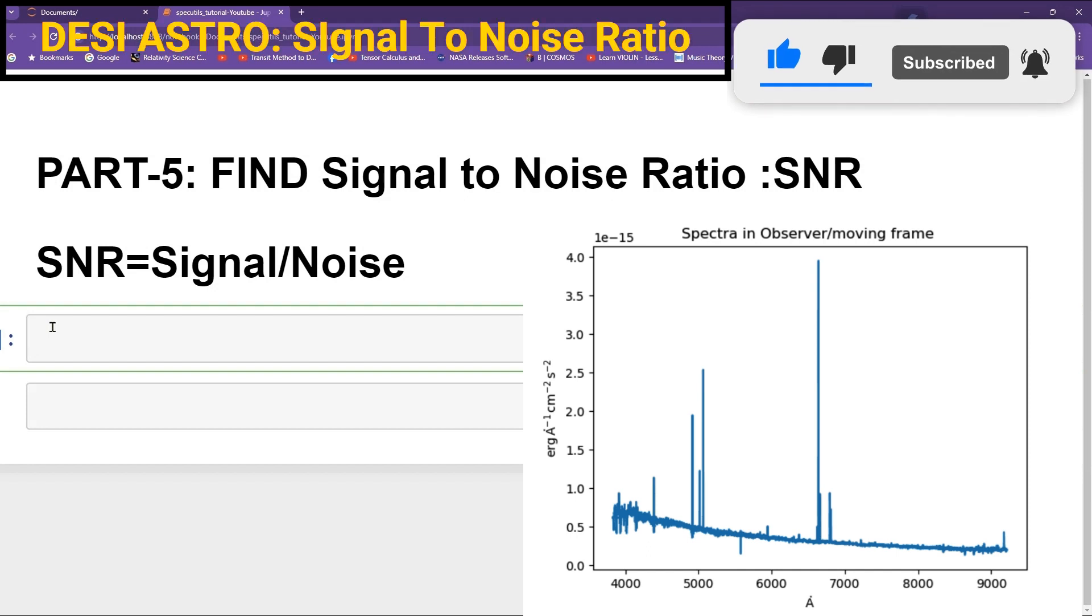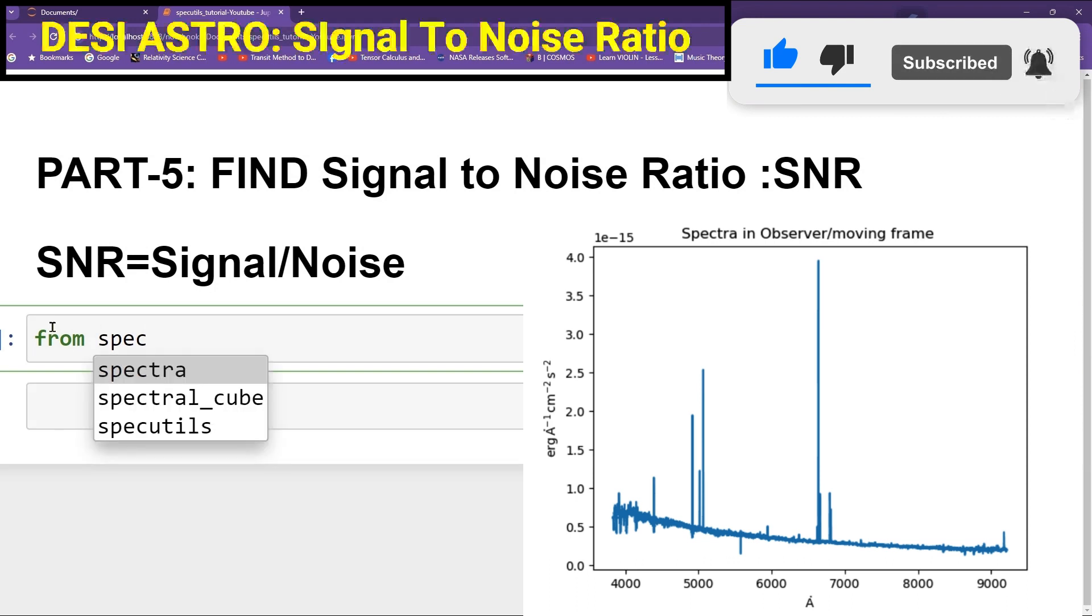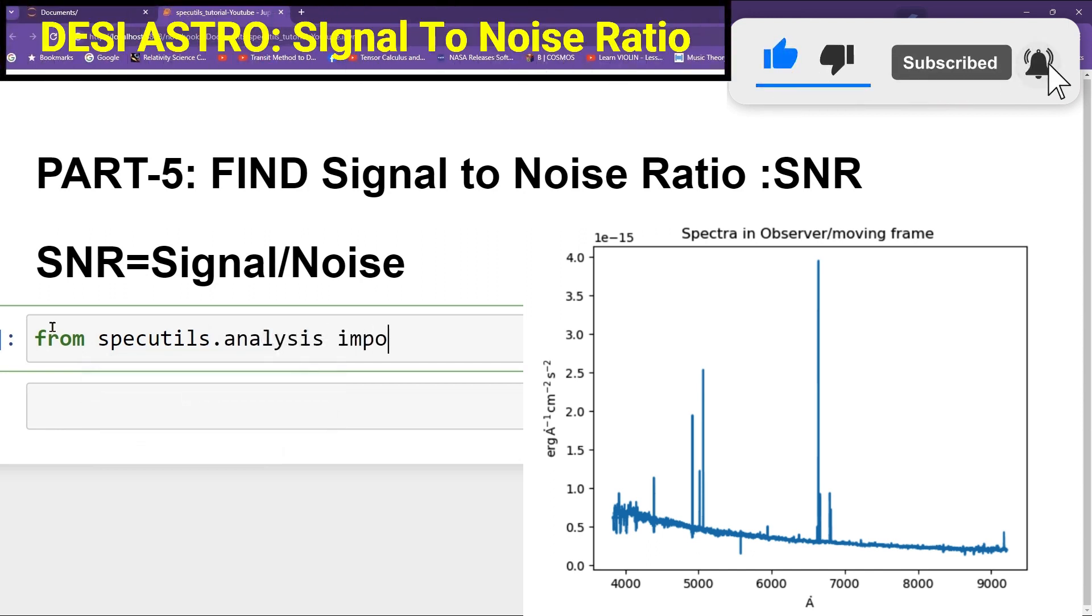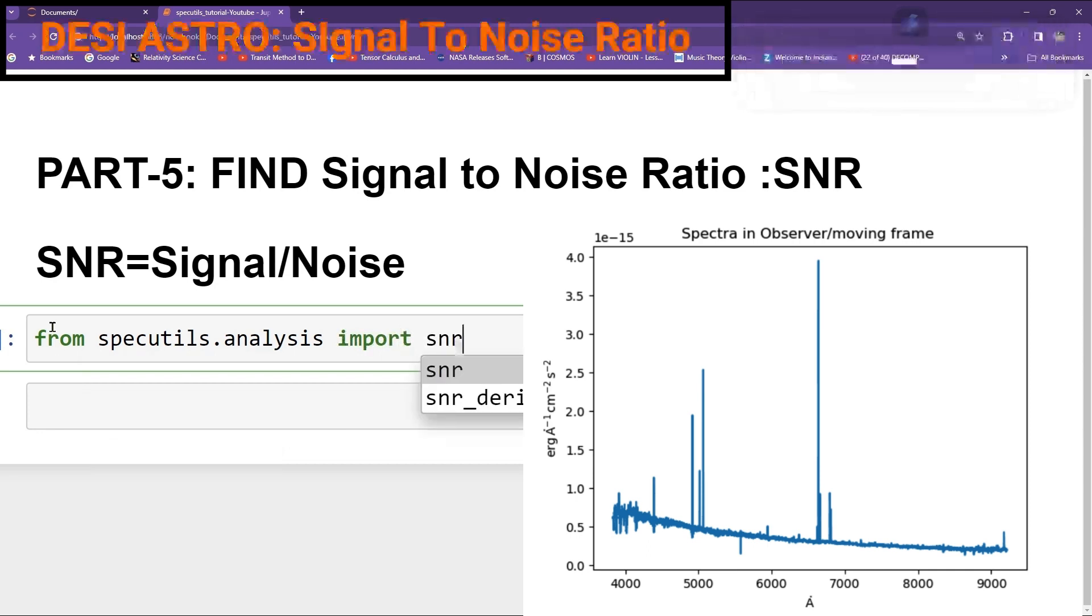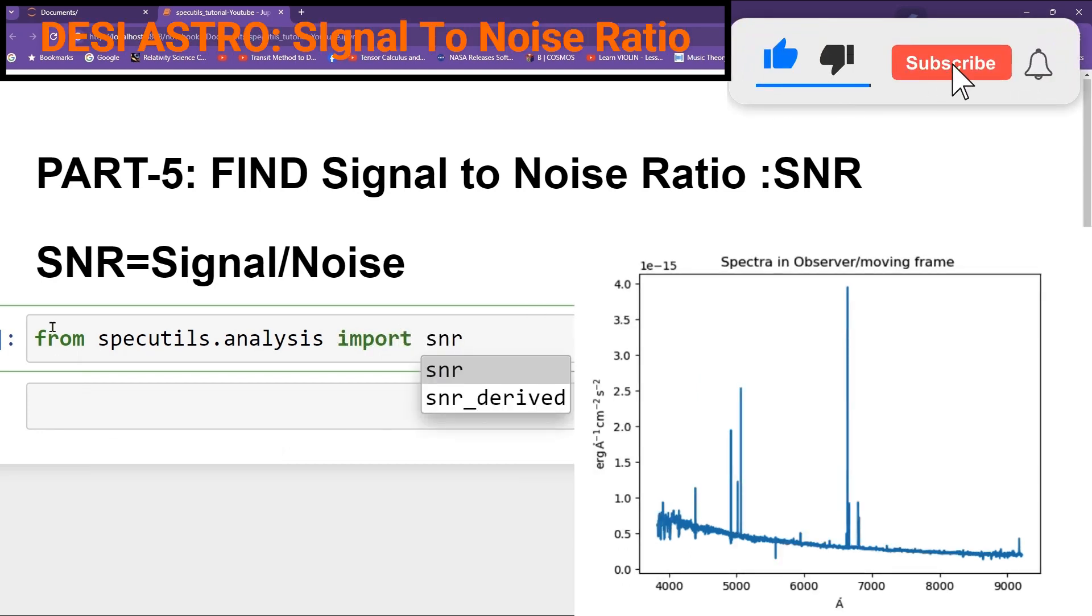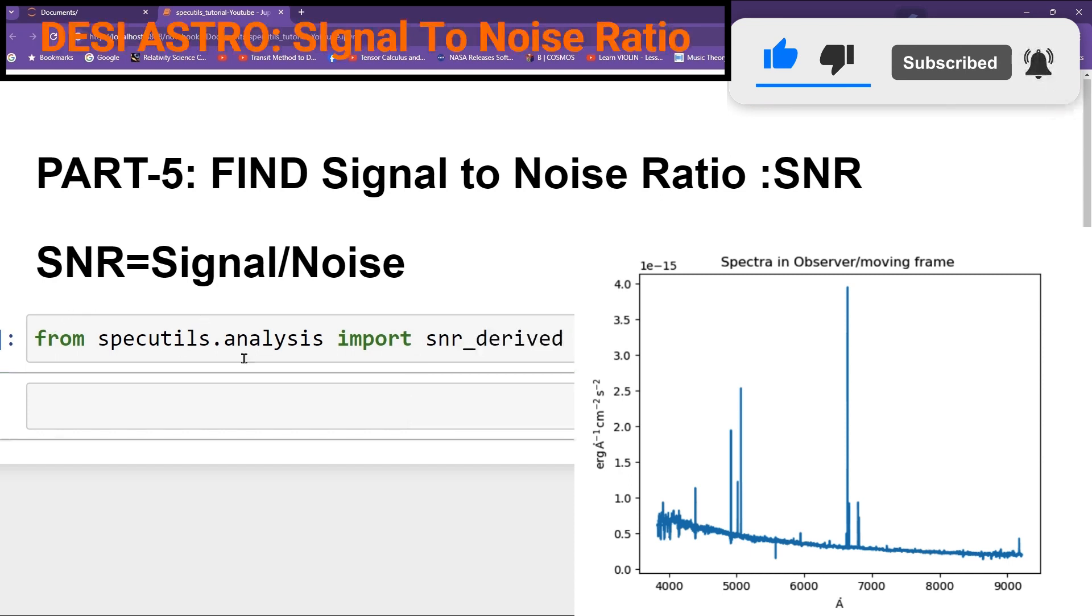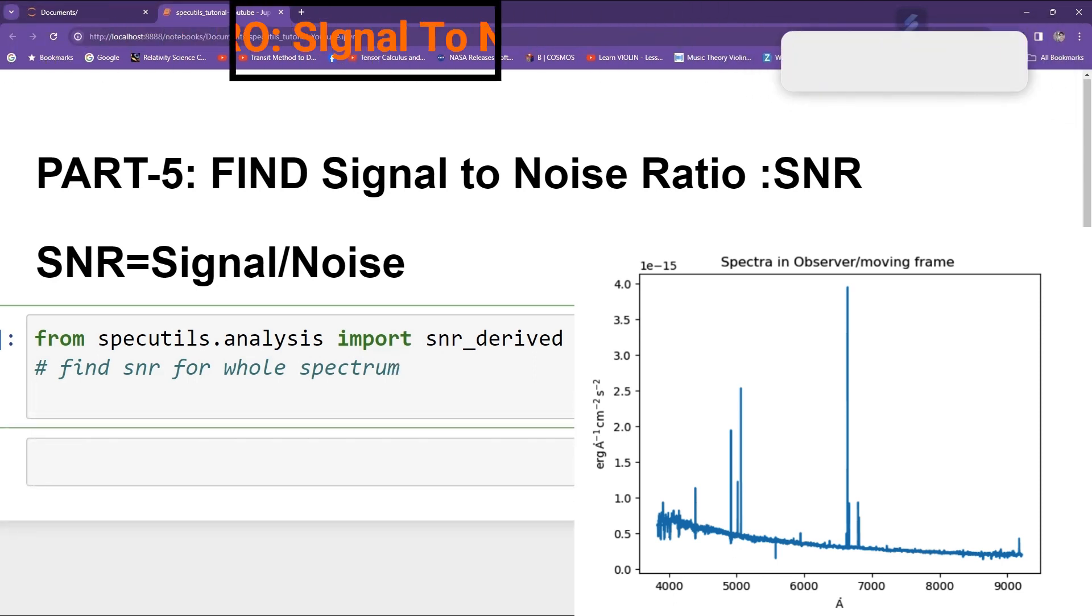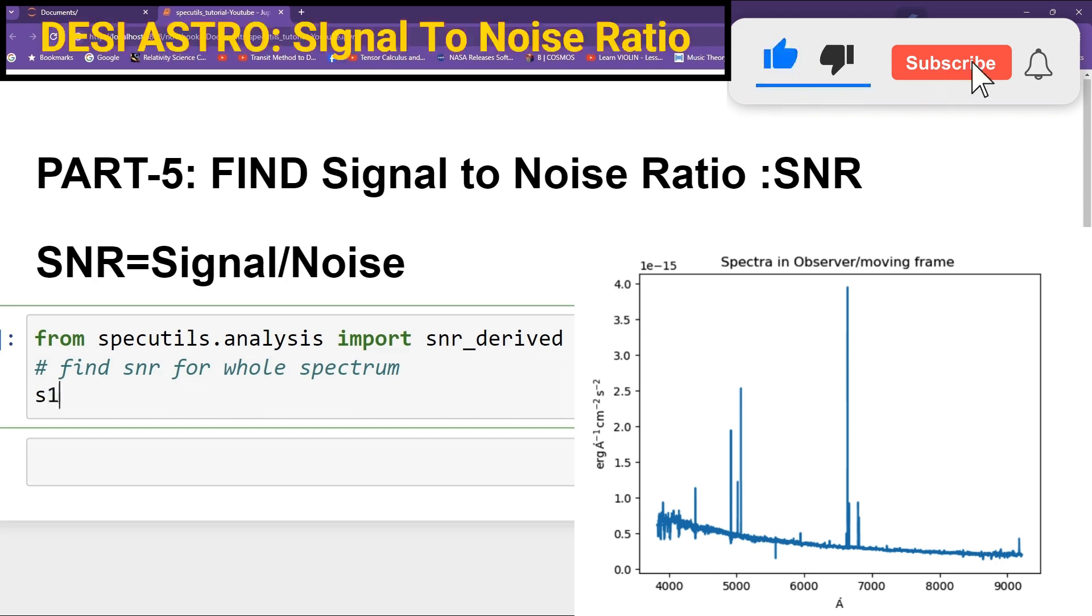First of all we will import module from specutils.analysis we will import snr_derived, and then we will find SNR for the whole Spectrum.